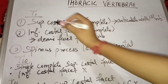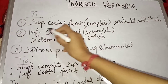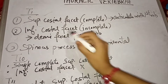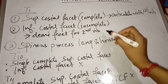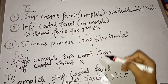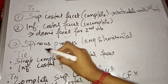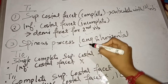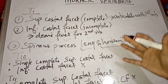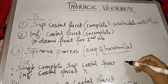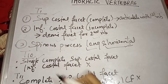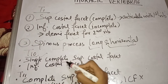Now let's discuss the atypical thoracic vertebrae. T1 has a superior costal facet which articulates with the first rib. The inferior costal facet is incomplete in T1 vertebra and is basically a demi facet for the second rib. The spinous process of T1 vertebra is long and horizontal, and the resemblance of T1 vertebra is like a cervical vertebra.